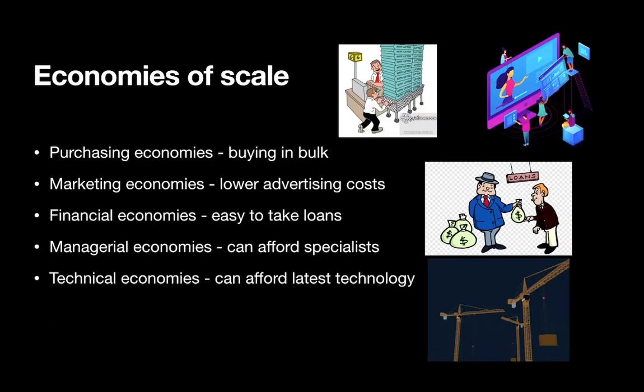There are five economies of scale, which are basically the advantages of a large business. First is purchasing economies — buying in bulk. The business has enough money to buy in bulk, so when they buy raw materials in bulk they get more discount. Then marketing economies means lower advertising costs, as the business is already known and doesn't have to spend as much on advertising. Financial economies means it is easier to take a loan, as the bank will be willing to lend to a well-known business.